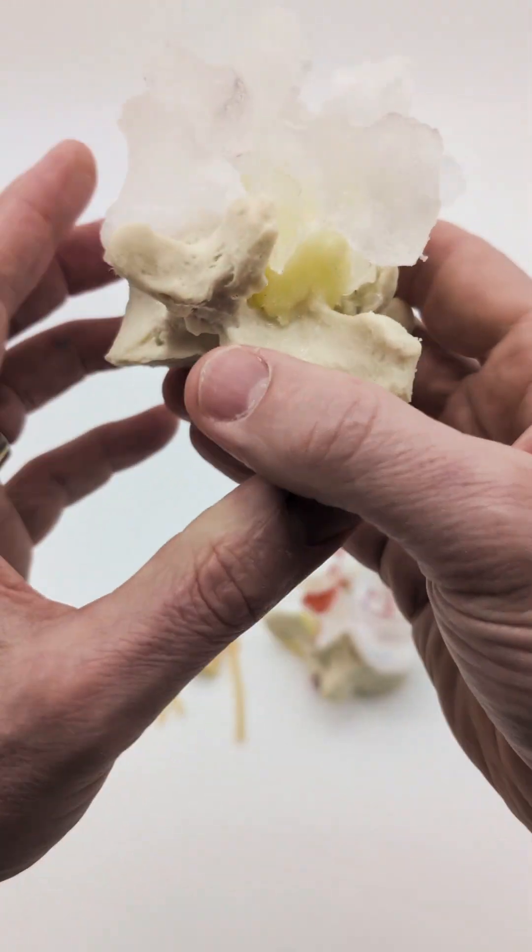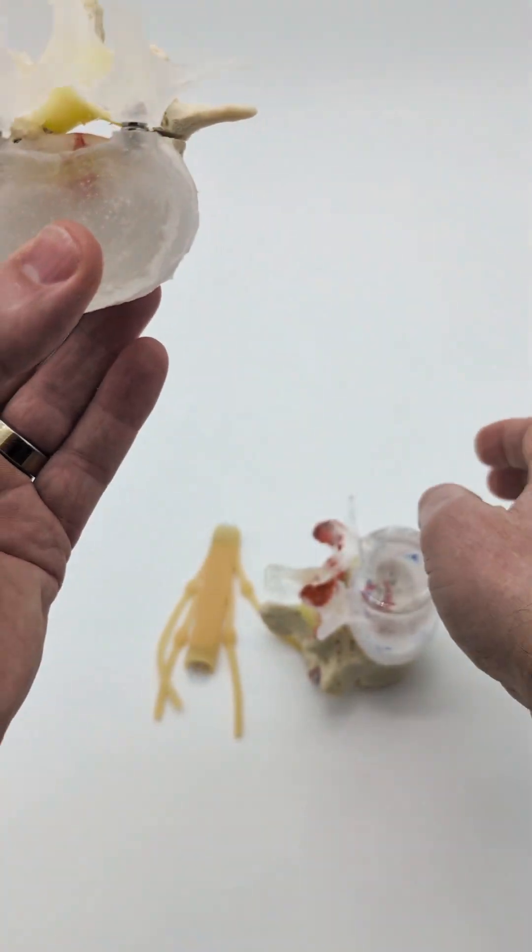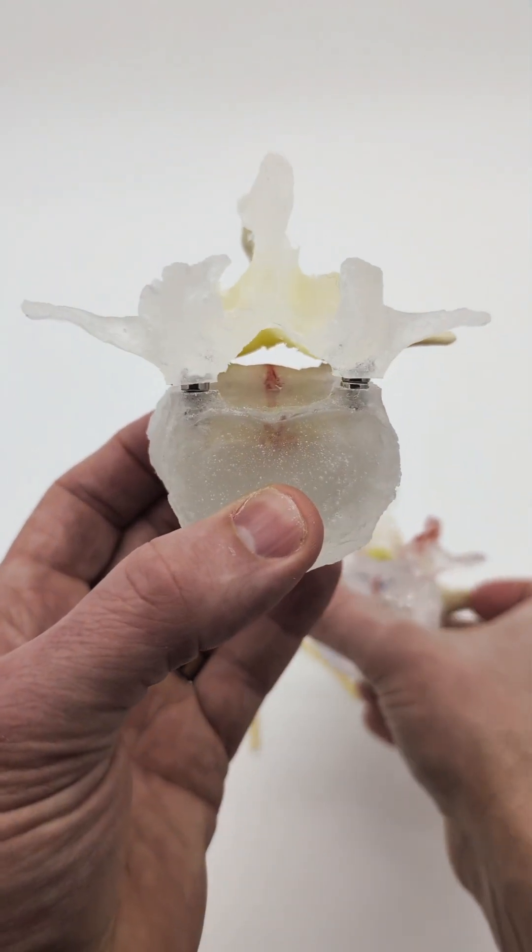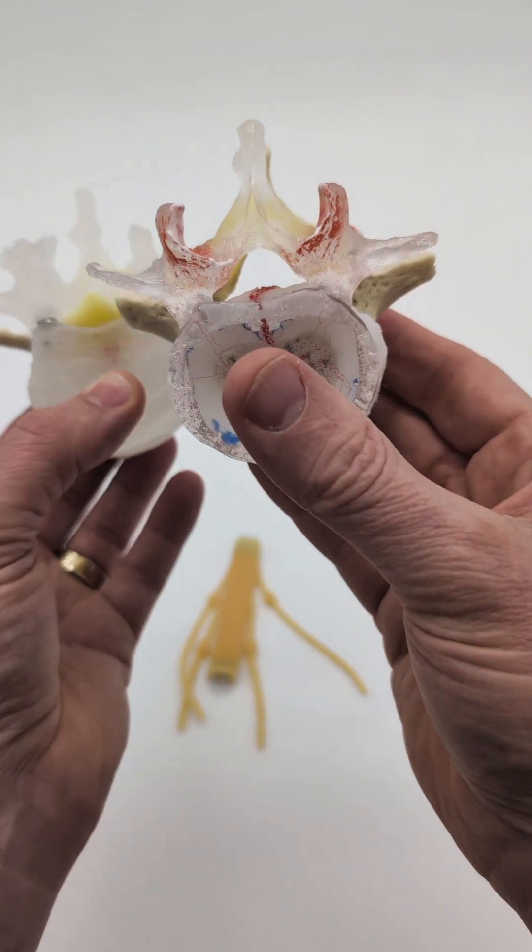You can see how the facets are more arthritic on this one and also the ligamentum flavum is thickened. You can see how it's narrowed. There's spinal stenosis compared to this one.